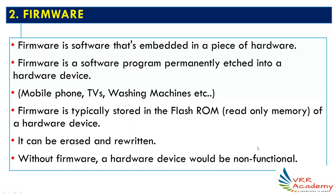The formal definition: firmware is a software that is embedded in a piece of hardware — it is fixed permanently in a hardware device. Examples of firmware: mobile phones, smart TVs, washing machines, and almost all electronic devices have firmware. Firmware is typically stored in ROM (read-only memory), but specifically a type called flash ROM. We will see what flash ROM means in the coming slides.